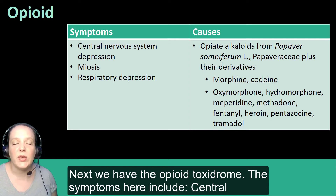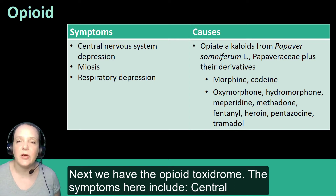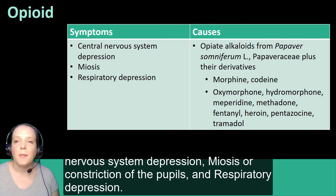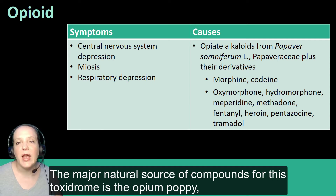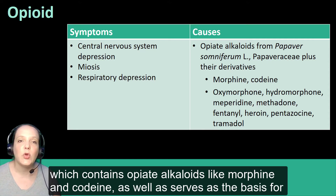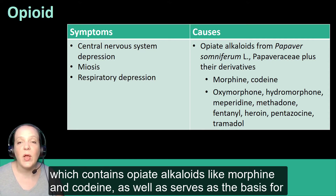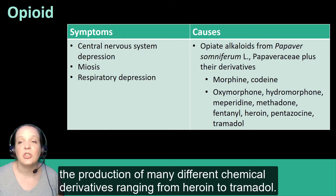Next, we have the opioid toxidrome. The symptoms here include central nervous system depression, miosis or constriction of the pupils, and respiratory depression. The major natural source of compounds for this toxidrome is the opium poppy, which contains opiate alkaloids like morphine and codeine, and also serves as the basis for the production of many different chemical derivatives, ranging from heroin to tramadol.